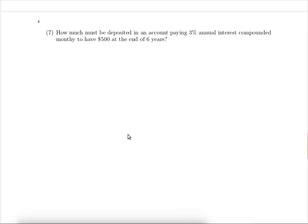Here's our next problem: How much must be deposited in an account paying 3% annual interest compounded monthly, so here we are compounding monthly, that will tell us the formula to use, and we need to have $500 at the end of six years.